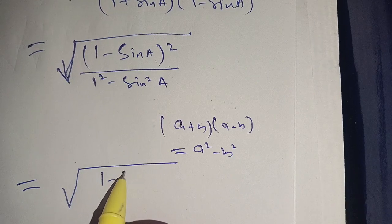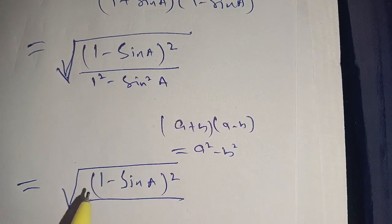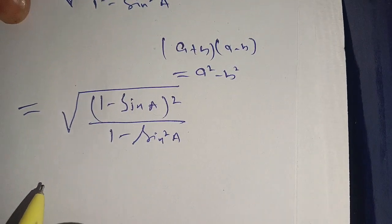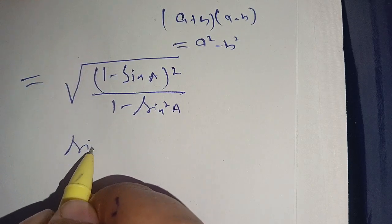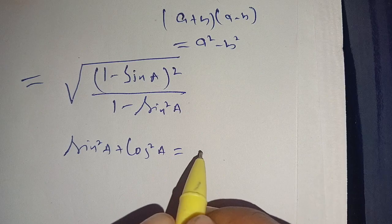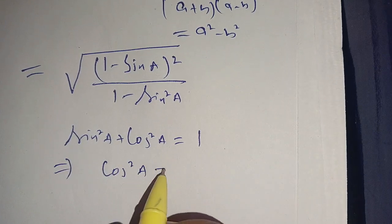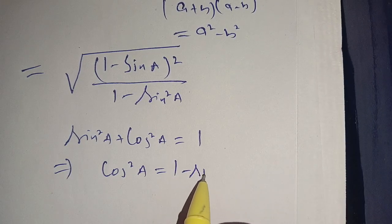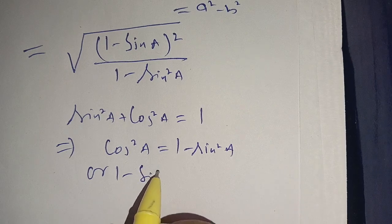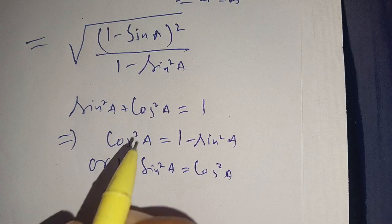In the next step we can write it as the square root of (1 minus sine of a) whole square, divided by (1 minus sine squared a). We know that sine squared a plus cos squared a equals 1, which means cos squared a equals 1 minus sine squared a, or equivalently, 1 minus sine squared a equals cos squared a.